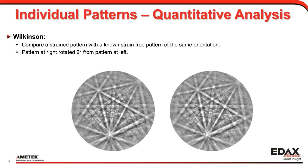In terms of quantitative analysis within individual patterns, this work was done by Angus Wilkinson at Oxford University, who has been a pioneer in this area. In his work, you compare two patterns — here I've manually rotated the pattern two degrees just to show the idea. You could also have not just a simple rotation, but a change in zone axis positions due to elastic strain, where the lattice is being stretched as opposed to dislocations creating plastic strain.